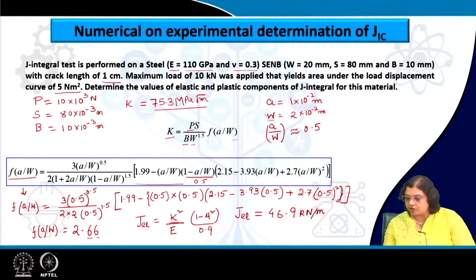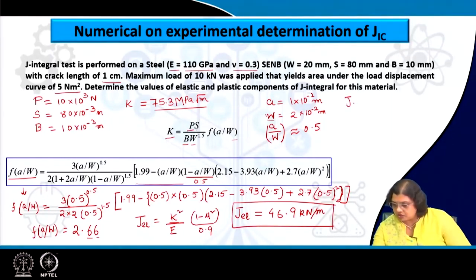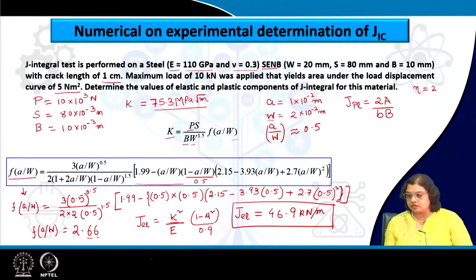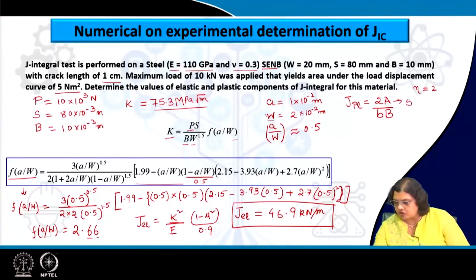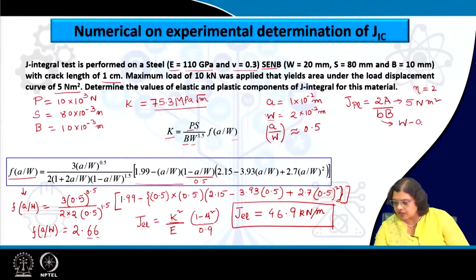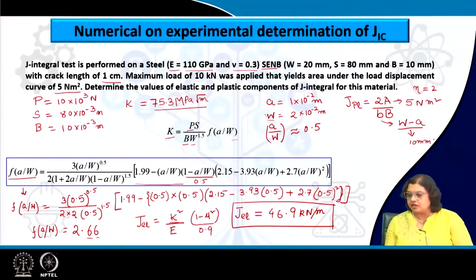For the plastic part: since this is an ACNB specimen, η equals 2. That makes J_plastic = 2 × (area) / (ligament length × thickness). The area under the load-displacement curve is 5 Newton meter square. The ligament length b = w − a = 20 − 10 = 10 millimeter, and thickness B is also 10 millimeter.